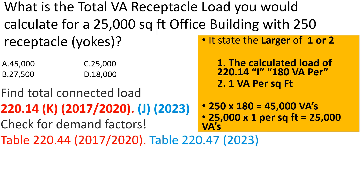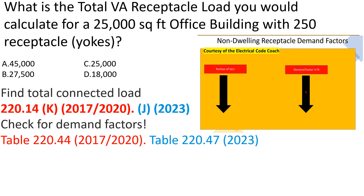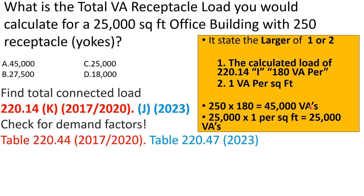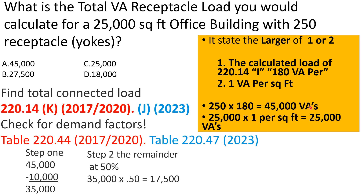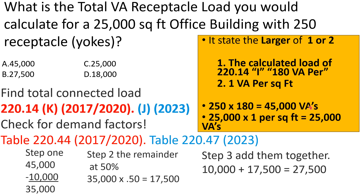That leads us to Table 220.44 if we're in the '17 or '20, or Table 220.47 if we're in the '23 — same information, different title. This table for non-dwelling unit receptacles works similarly to Table 220.42/220.45: the left side gives our portion of VAs and the right side gives our demand factor percentage. We take the first 10,000 VAs at 100%, then take the remainder and multiply by 50%. We take the 10,000 we set aside, add it to the new reduced load, and we get 27,500 VAs. We select B. Great job.